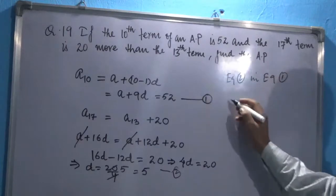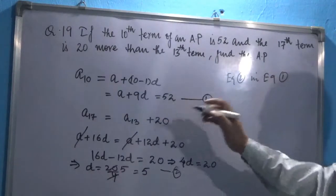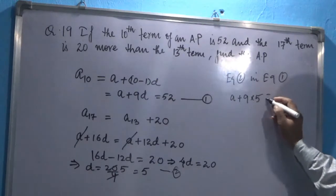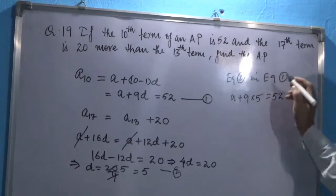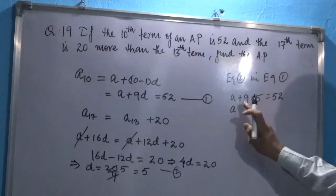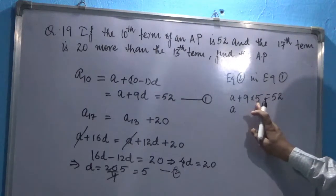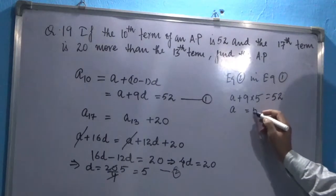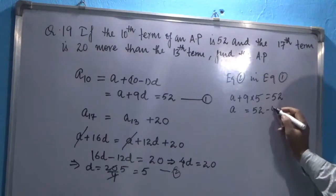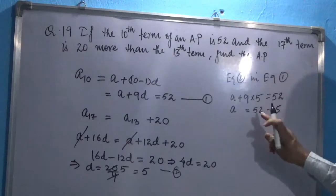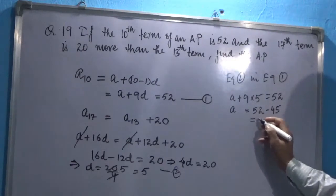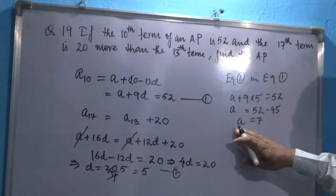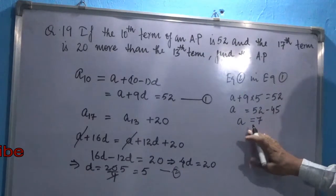So that equation 1 will become A plus 9 into 5 equal to 52. So A plus 45 equals 52. When it goes to that side, it becomes minus, so 52 minus 45 will give us 7. So here we have got the second variable also, which is 7.